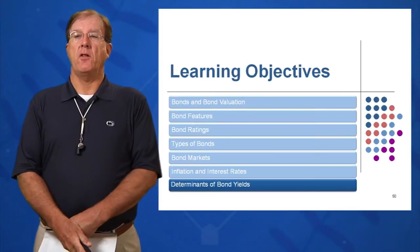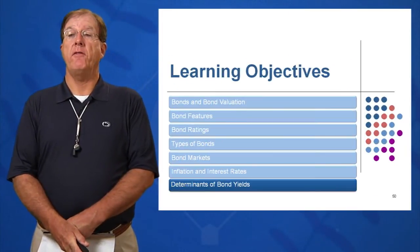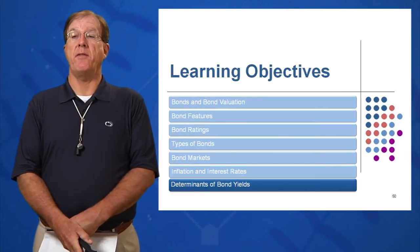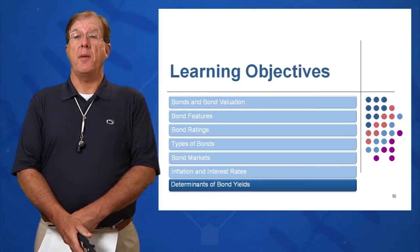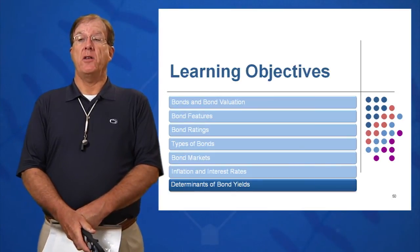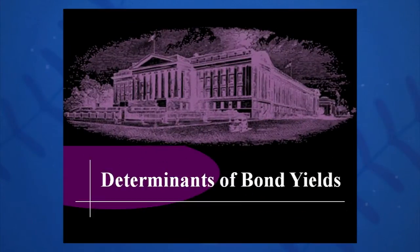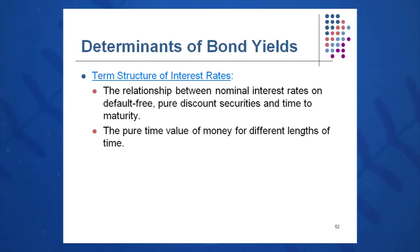The seventh and final learning objective for session number seven is the determinants of bond yields. What determines the yield on a bond? Essentially the Fisher effect, and it is reflected in the term structure. Within the bond yield there is a real return, an inflationary return, and that little RH thing — the interest rate risk component.